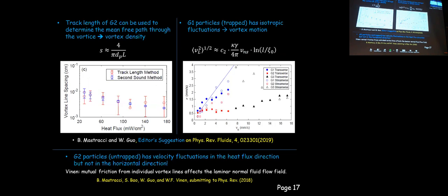Based on this physical picture, we can extract more information especially in the low heat flux region. By analyzing the track lengths of the untrapped G2 particles — which are correlated with their mean free path through the vortex tangle — we can estimate the vortex tangle density using a simple formula. Surprisingly, this gives vortex tangle density that agrees very well with values measured using second sound. So PTV not only produces nice particle tracks, it also allows us to measure the vortex line density at low heat flux.